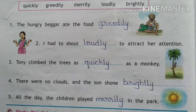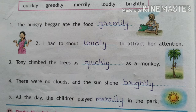Let us read and fill in the blanks. First: the hungry beggar ate the food greedily. Second: I had to shout loudly to attract her attention. Third: Tony climbed the trees as quickly as a monkey. Fourth: there were no clouds and the sun shone brightly. Fifth: all day the children played merrily in the park. Ate how? Greedily. Shouted how? Loudly. Climbed how? Quickly. Shone how? Brightly. Played how? Merrily. All are answering the question 'how', so they are adverbs of manner.